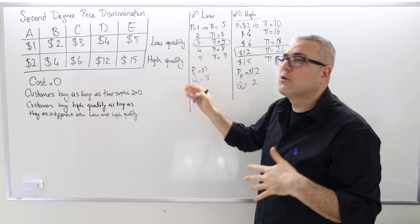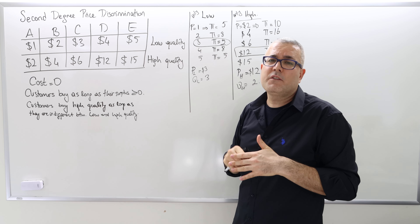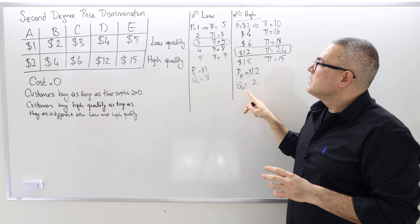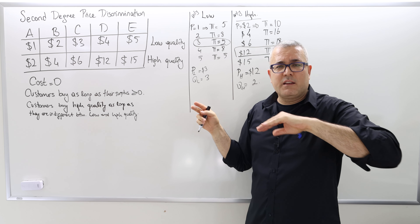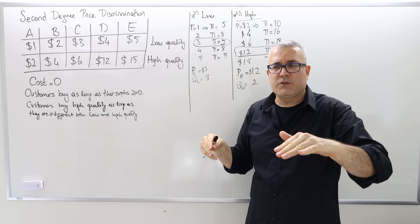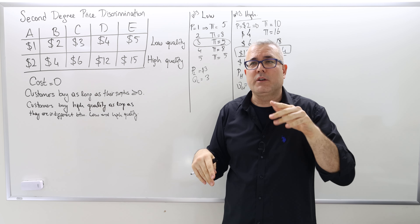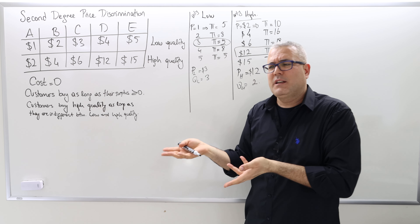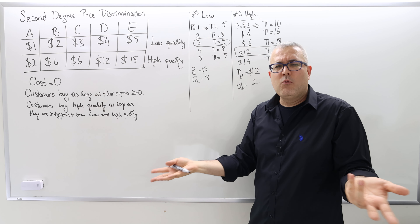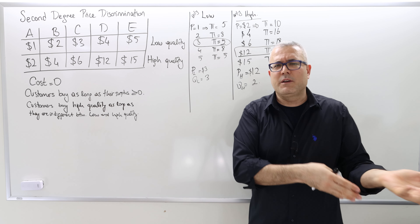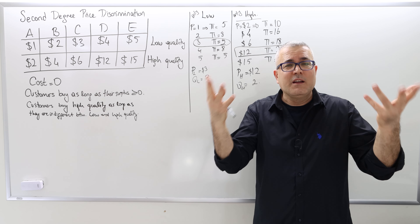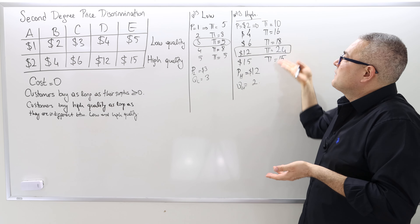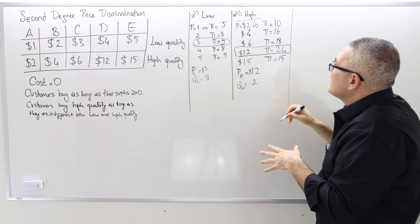The monopolist ignores the other customers because D and E have significantly high willingness to pay. So these are uniform prices — one good, one price. It would be idiotic to charge two different prices for the same quality good, because the customer would always buy the cheaper one. So now let's extend the alternatives and consider the case where both high and low quality products are offered.